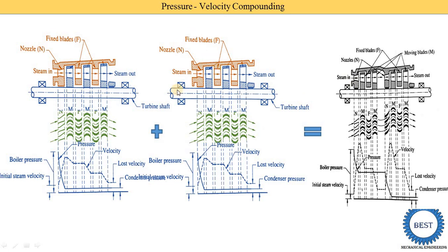Then after, we connect one more velocity compounding. This is the nozzle — here you see this is the nozzle — then moving plates, this is the fixed plate, and this is the moving plates. So this is a simple logical thing: if you understand velocity compounding then you can easily explain pressure-velocity compounding. Same way, this nozzle and moving plate arrangement is used.